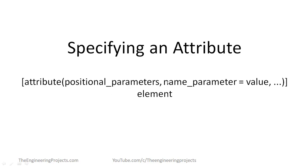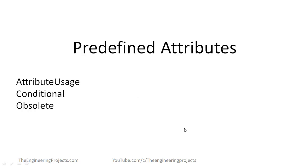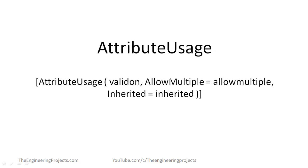Positional parameters specify essential information and named parameters specify optional information. So the first parameter is the essential information and the second parameter is the optional information. Now the .NET framework provides us three predefined attributes: AttributeUsage, Conditional, and Obsolete. The AttributeUsage predefined attribute describes how a custom attribute class can be used.